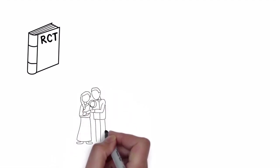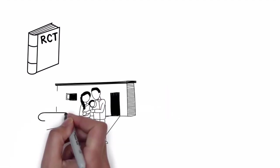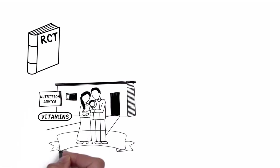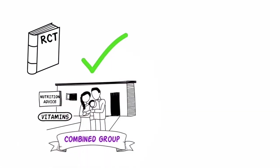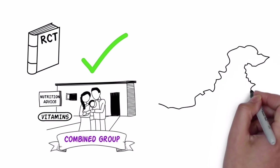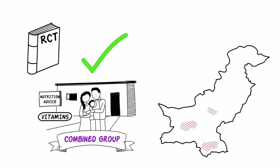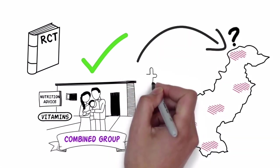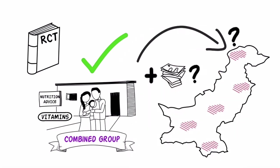Results from a single RCT should be used carefully to inform future decisions. Just because an intervention was found to be effective in one context doesn't necessarily mean it can be scaled up effectively or transferred to another context. You also need to consider whether there are sufficient funds to scale up, any equity issues that need to be addressed, and whether contextual factors will limit the feasibility or effectiveness of the programme in a new situation.